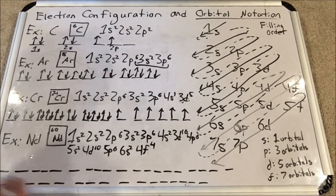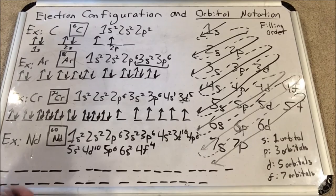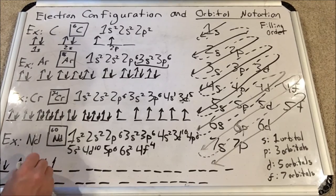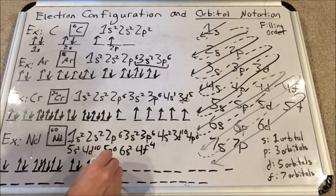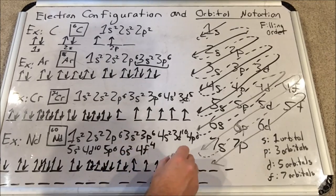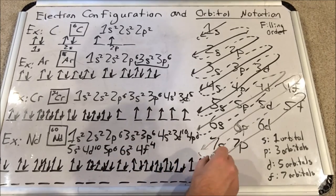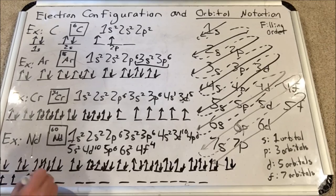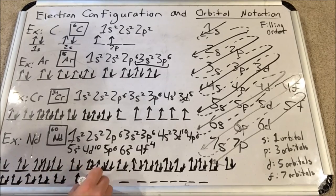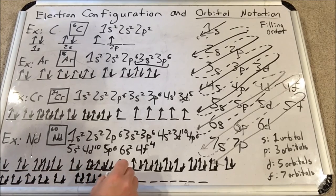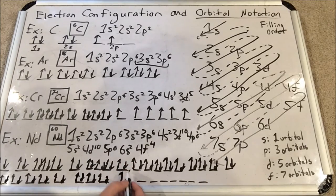We're at 6s now and as you can see it's 6s2, so we're going to fill that up and then we're going to start with 4f. There are four in here.